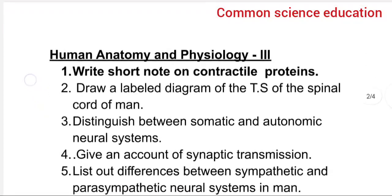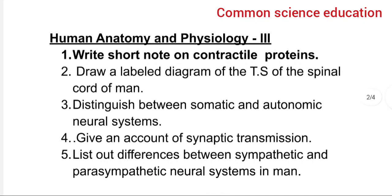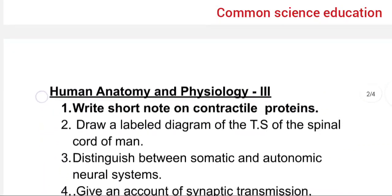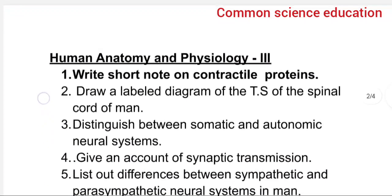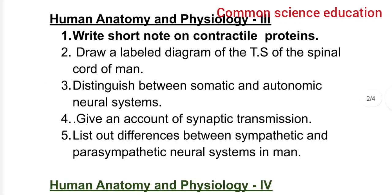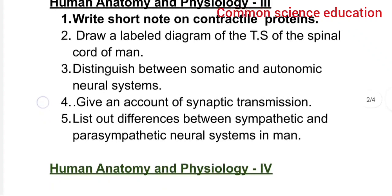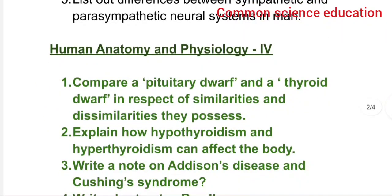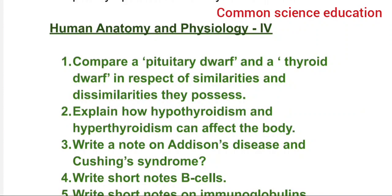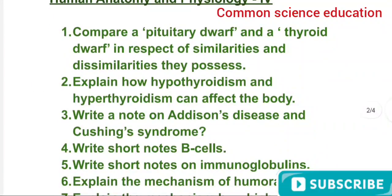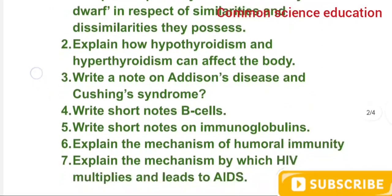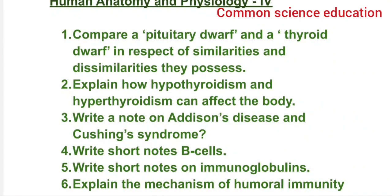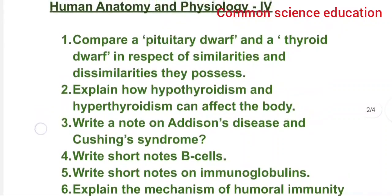For human anatomy 3, compare pituitary dwarf and thyroid dwarf with respect to similarities and dissimilarities. Explain how hypothyroidism and hyperthyroidism can affect the body. Write a note on Addison's disease and Cushing's syndrome.